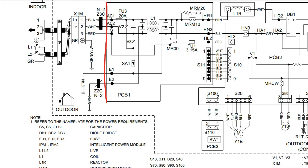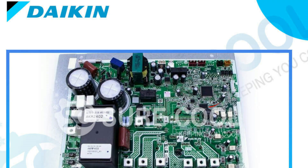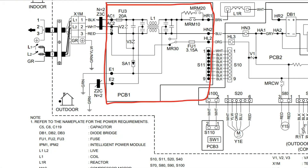Our next component in this lineup is the printed circuit board. Ladies and gentlemen, I'd like to introduce you to the conductor of the orchestra. This is where the brains are. There's a microprocessor in there — a computer chip with all kinds of computer logic programmed into it, with algorithms likely developed by some very talented engineers at the brand headquarters.